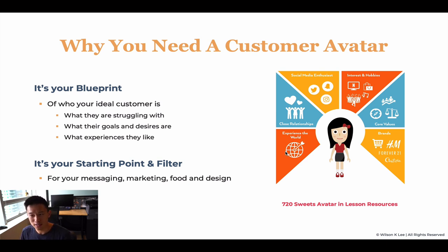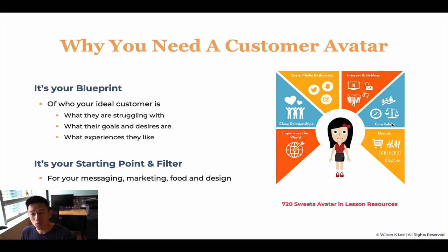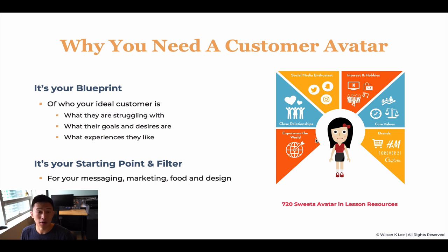These are the different items she enjoys: close relationships with family and friends, social media, interests and hobbies like Netflix, shopping, raves, and EDM. Her core values include balance and having a purpose in life. The brands she loves include H&M, Forever 21, and Aritzia. She loves to shop online and values experiencing the world. Because we were able to fine-tune her profile, we were able to grow to more than seven locations — just because of this simple but super effective strategy.